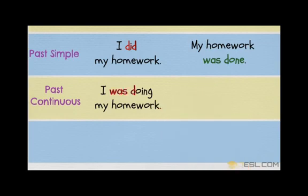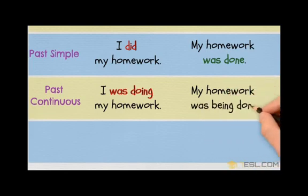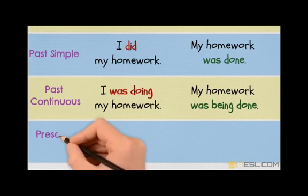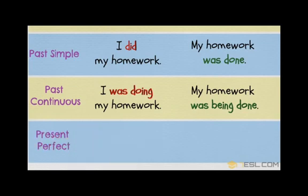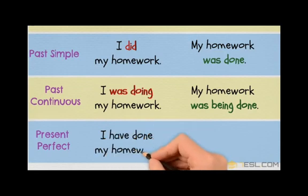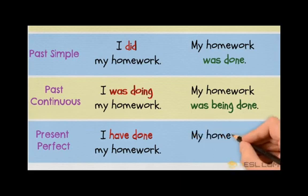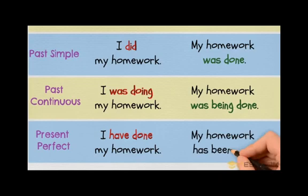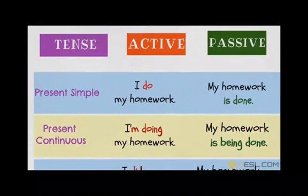In past continuous, the active voice is 'I was doing my homework.' The passive is 'My homework was being done.' In continuous tenses we put 'being' between the helping verb and the main verb. For present perfect, active is 'I have done my homework.' The passive is 'My homework has been done,' putting 'been' between 'have' and 'done.'